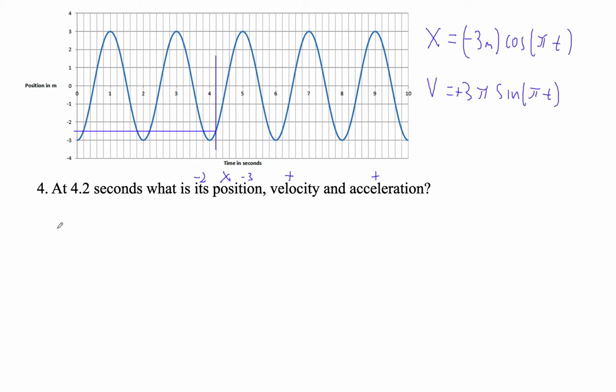So now we just have to plug that in. You've got to make sure you are in radians. So our x is going to be the opposite of 3, cosine of pi times t. I'm turning my calculator on. I'm checking the mode. Oh, I'm in degrees. That will not work. I'm now in radians.